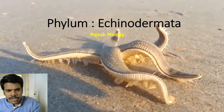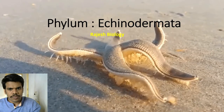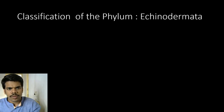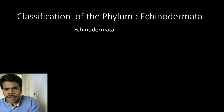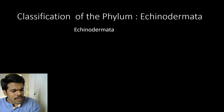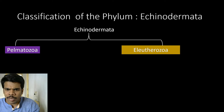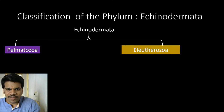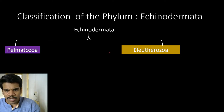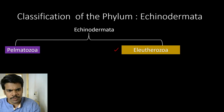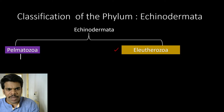So, Pelmatozoa classification. Echinodermata have two subphylums. They consist of two subphylums: Eleutherozoa and Pelmatozoa. In this class I am going to explain about the subphylum Pelmatozoa only. Later I will explain about Eleutherozoa — today I will complete Eleutherozoa also, at any cost.